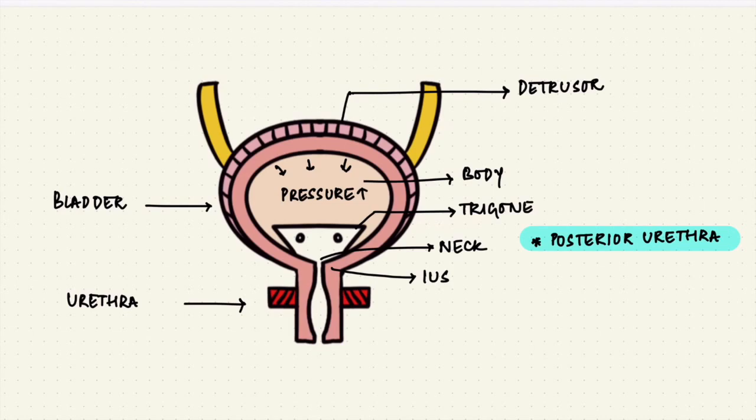The bladder neck has a muscle called the internal urethral sphincter. This muscle is involuntary. As long as the urethral pressure is higher than the bladder pressure, continence is maintained. If the urethral pressure falls or the bladder pressure rises, there'll be incontinence.